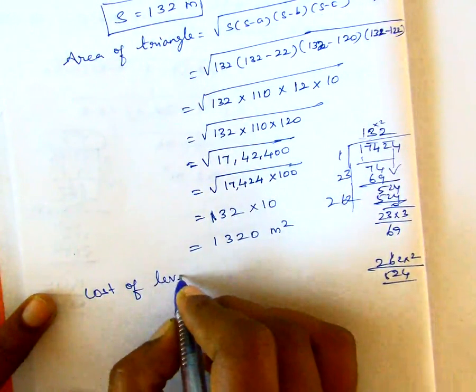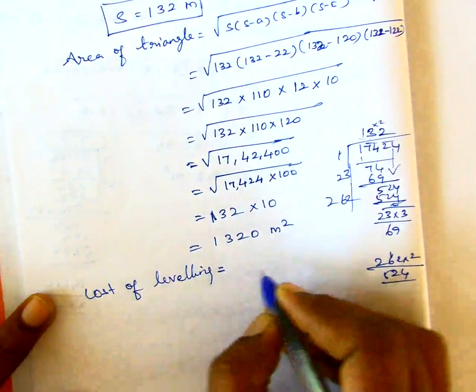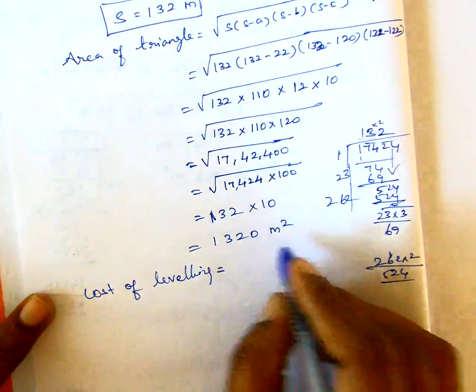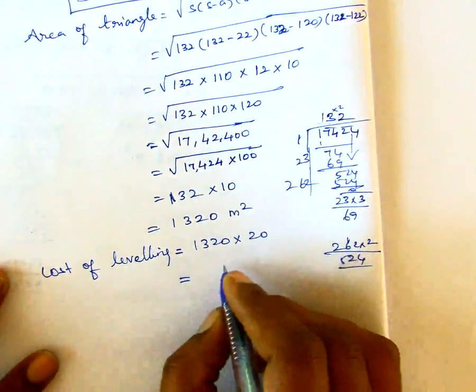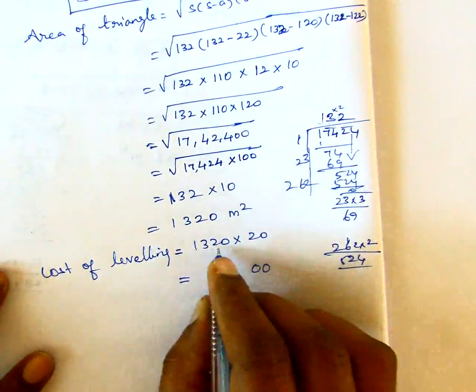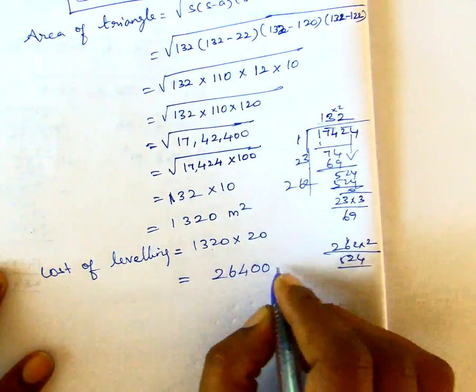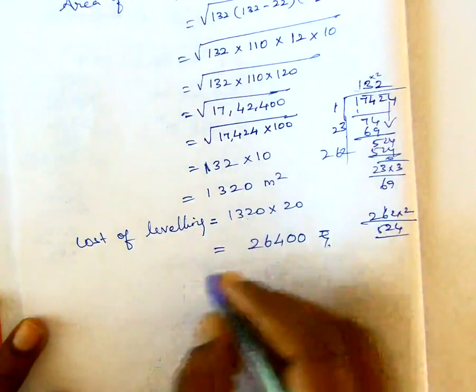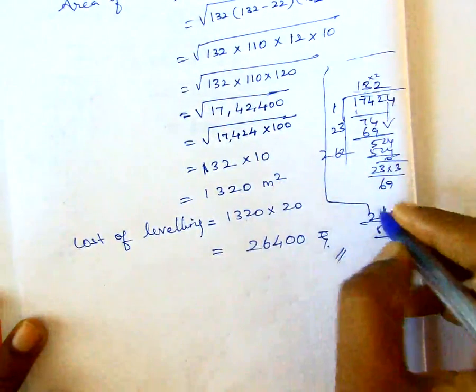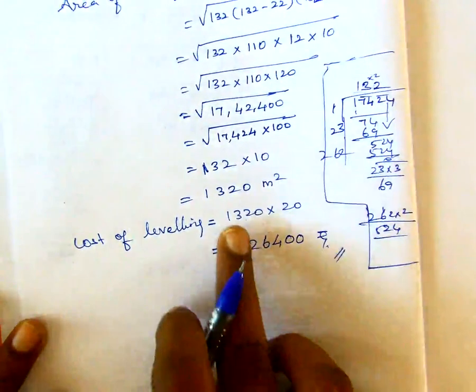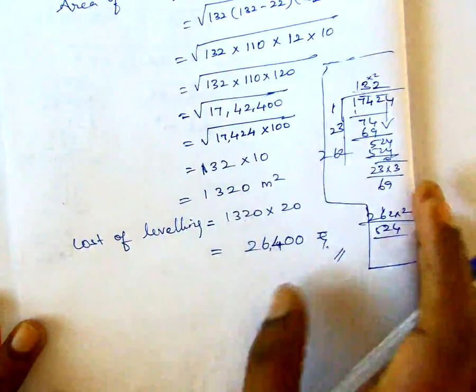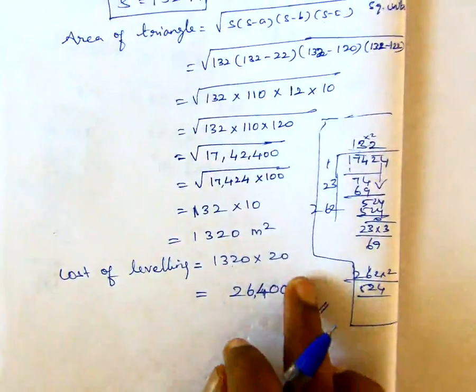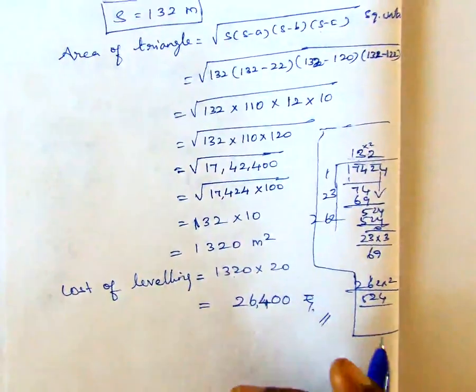Now we have to find the cost of leveling. Per square meter is 20 rupees. So this area multiplied by 20 rupees, the cost of leveling is 26,400 rupees. This is the cost of leveling the triangular ground.